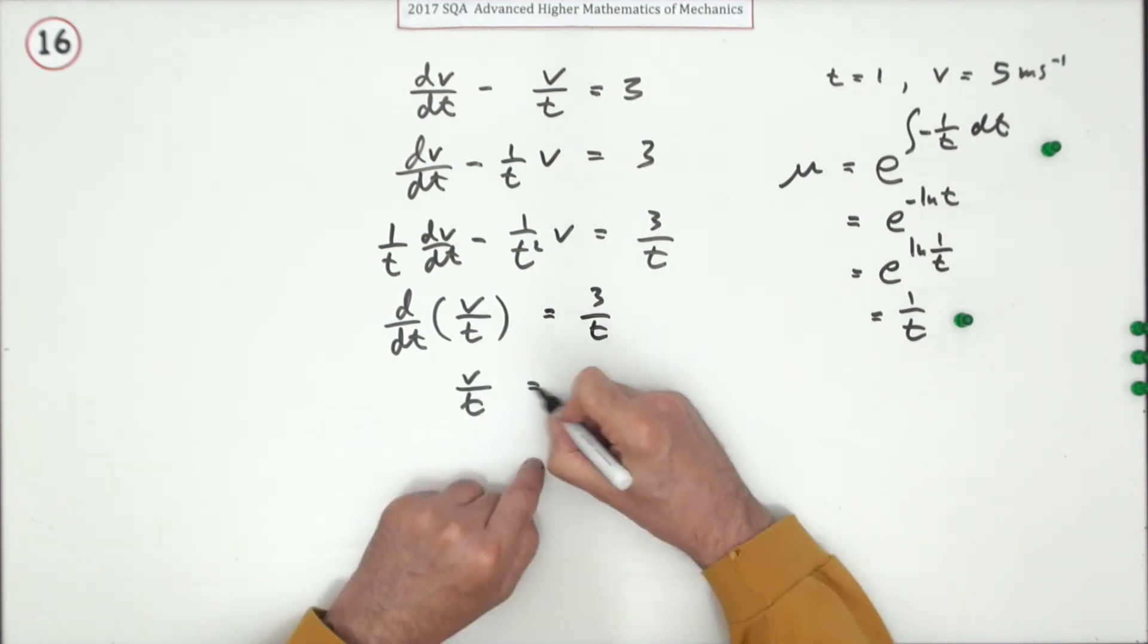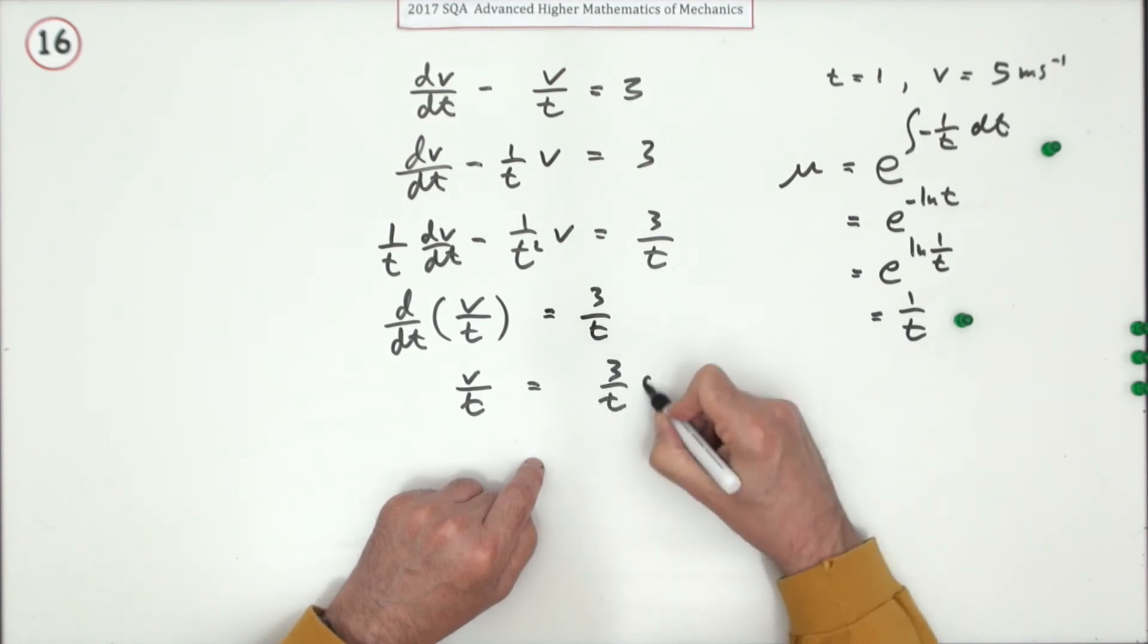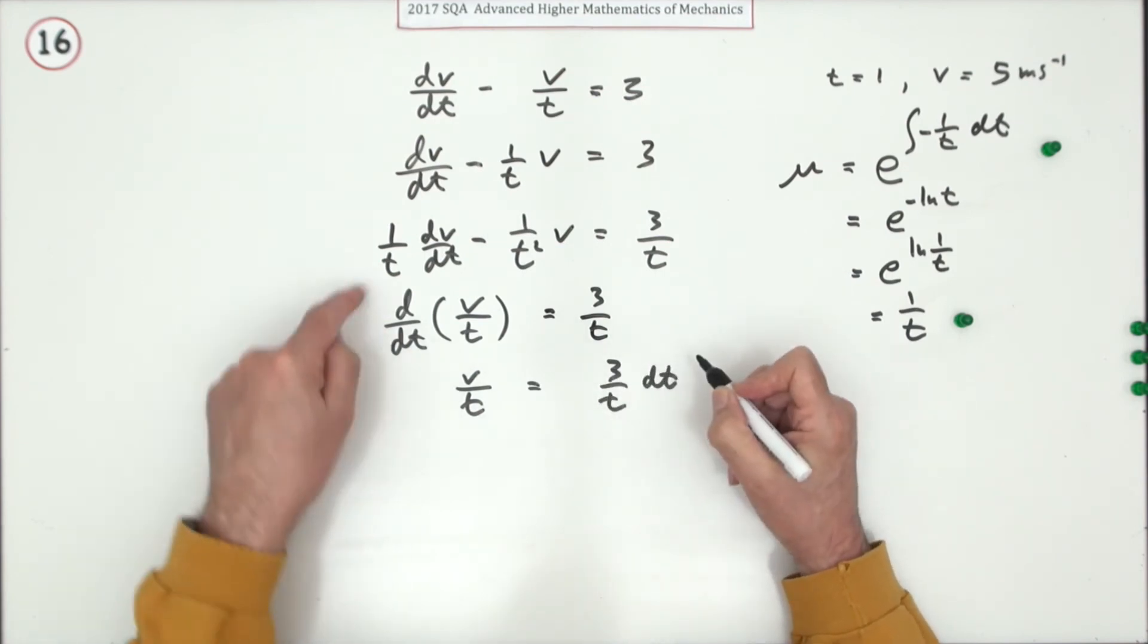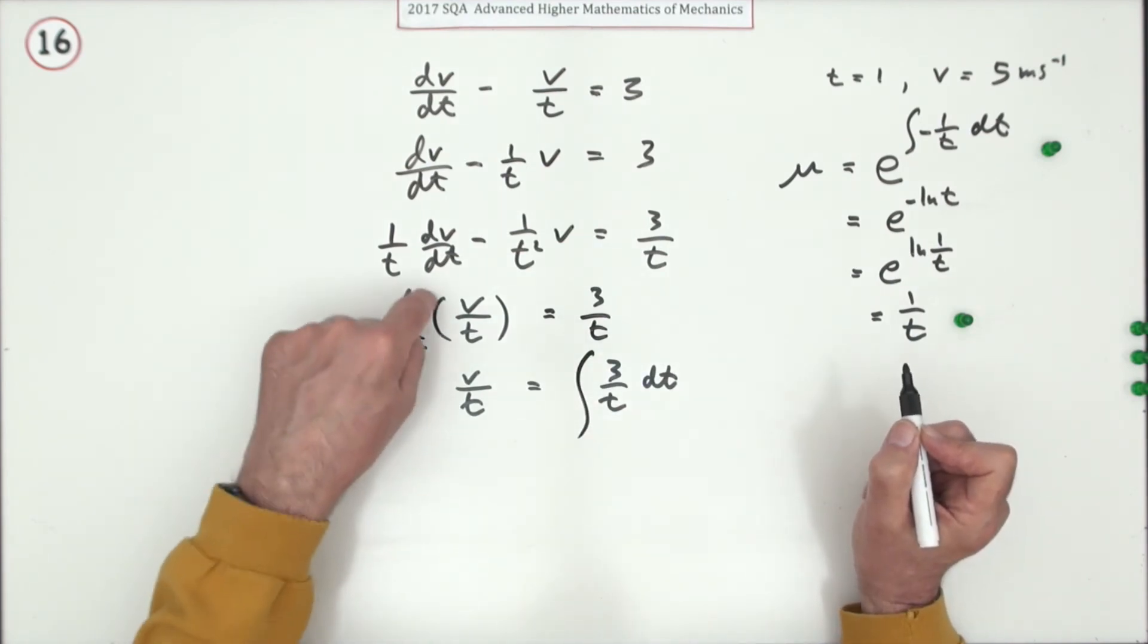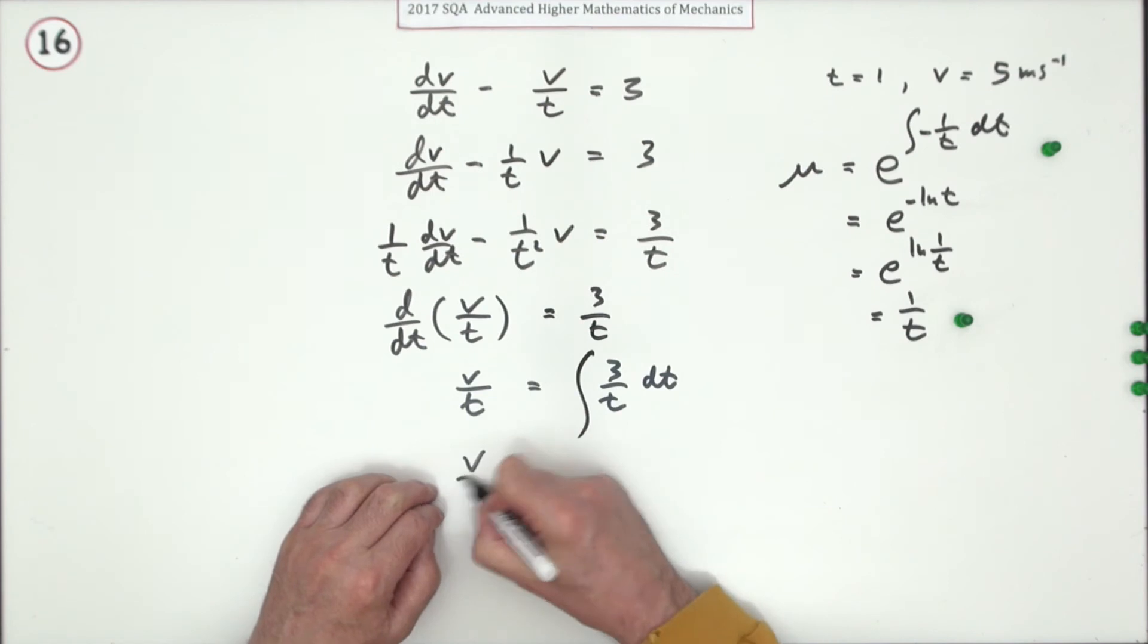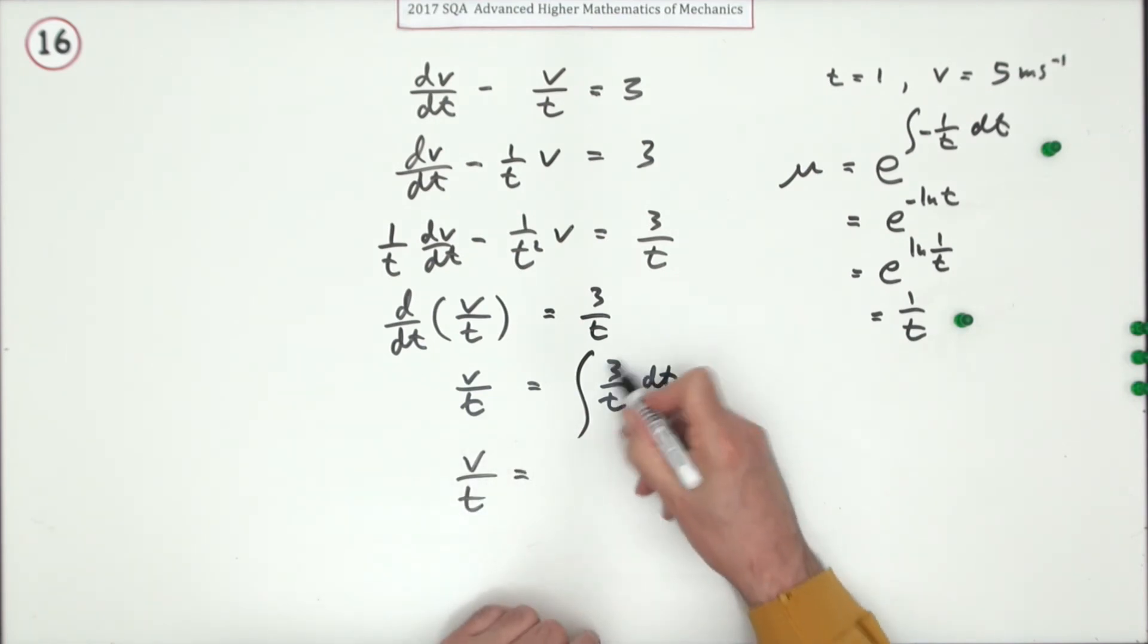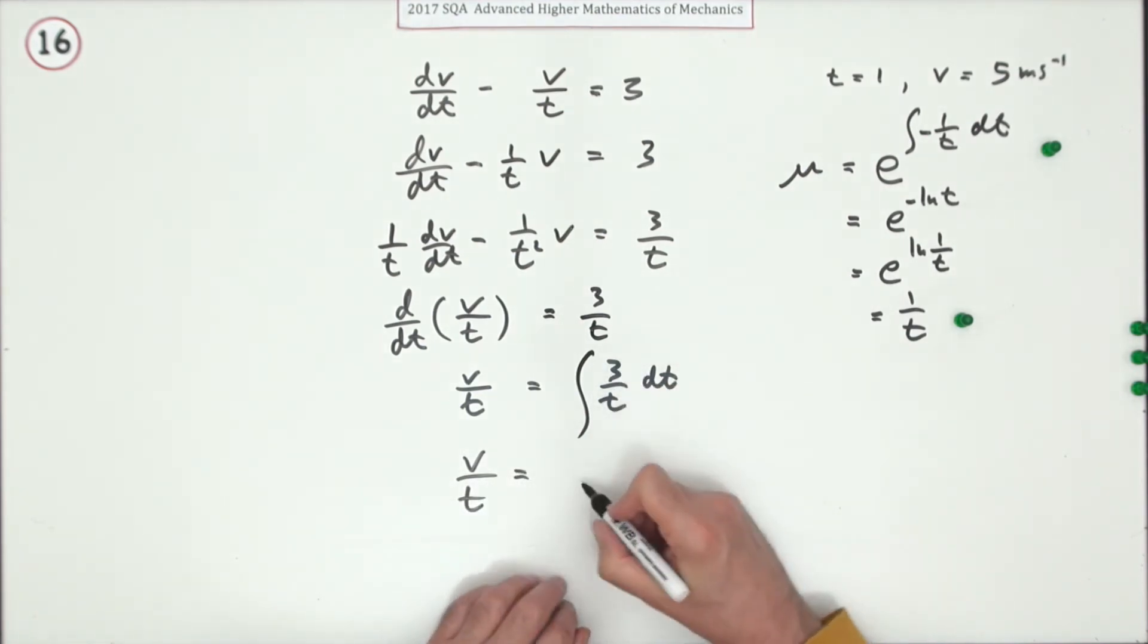So taking that dt across and integrating it back up will give you this, because d of that will just go back to that variable. So v/t is equal to, now integrating that back up, there's that log again: 3ln(t), but this time there will be a plus c.